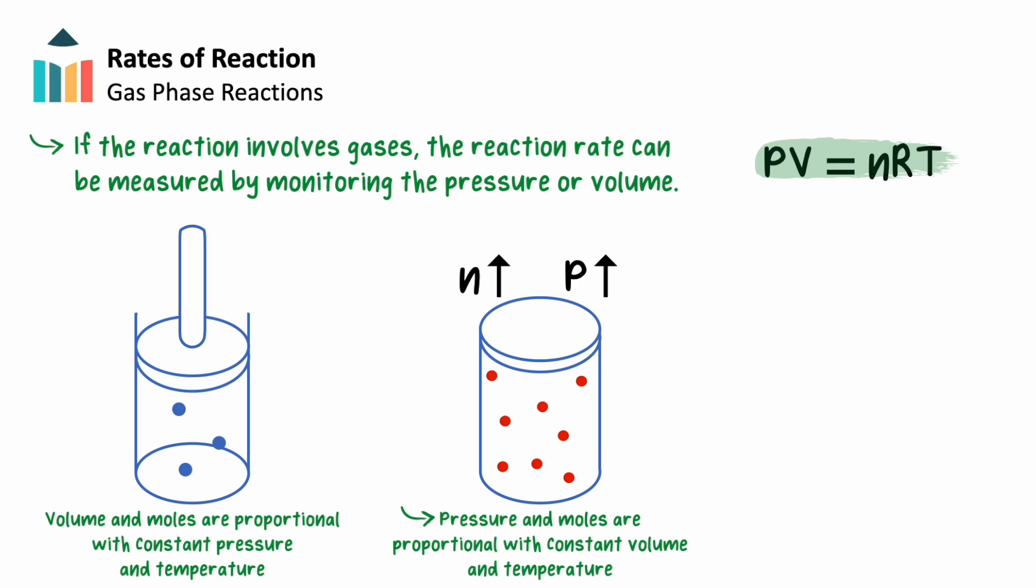Pressure can be kept constant by collecting gas in a syringe, where the plunger moves outwards so that the gas remains at atmospheric pressure as the volume continues to increase. In this setup, the change in moles is proportional to the change in volume, with temperature and pressure held constant.